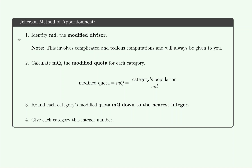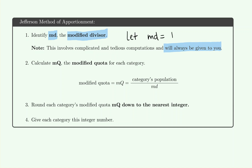The steps of the Jefferson method are these. We would first need to identify MD — the modified divisor. Finding the modified divisor is a time-consuming process, so we will always be given MD. In all problems from this section, you'll normally see something like: let MD, the modified divisor, be equal to a given number. This is something we identify in the problem, not something we find ourselves.